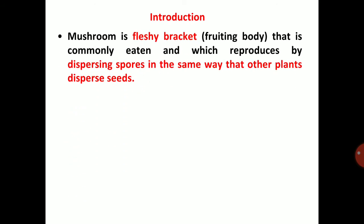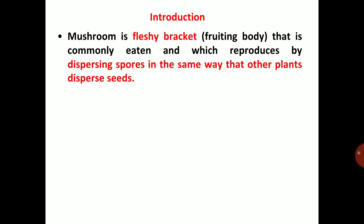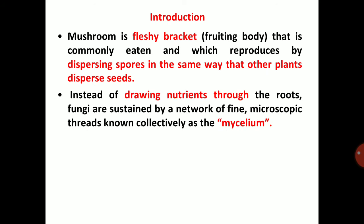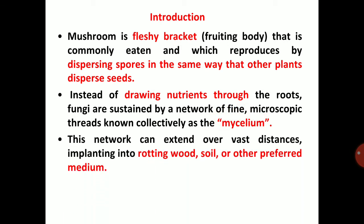Introduction: mushroom is a fleshy bracket or fruiting body that is commonly eaten and which reproduces by dispersing spores, in the same way that other plants disperse seeds. Instead of drawing nutrients through roots, fungi are sustained by a network of fine microscopic threads known collectively as the mycelium. This network can extend over vast distances, implanting into rotting wood, soil, or other preferred medium.